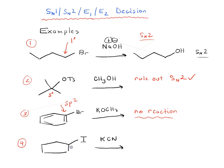In the last example, we have a cyclopentane attached to an iodine — we can't rule out anything yet, so we leave that as is. The number one thing to ask yourself is whether you're looking at a primary, secondary, tertiary, methyl, or sp2 hybridized carbon with a leaving group. From there you can make decisions about what reactions to rule out and what reactions may still be possible.